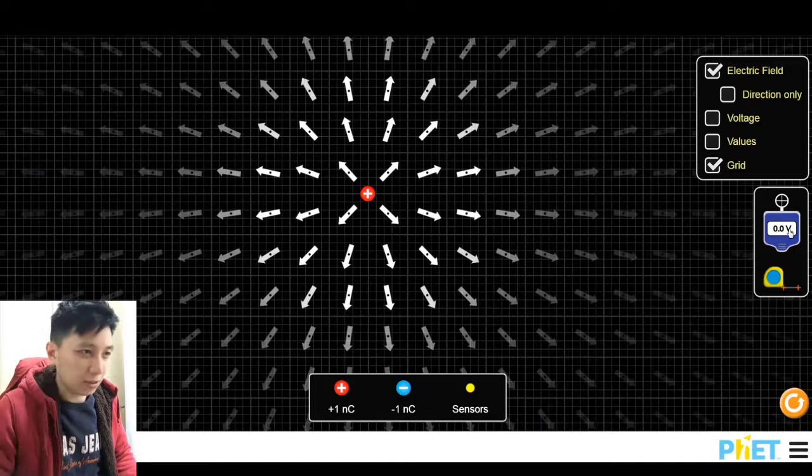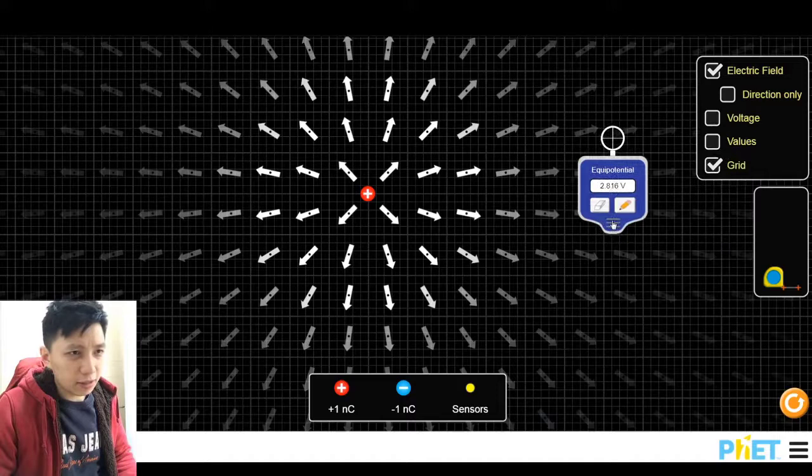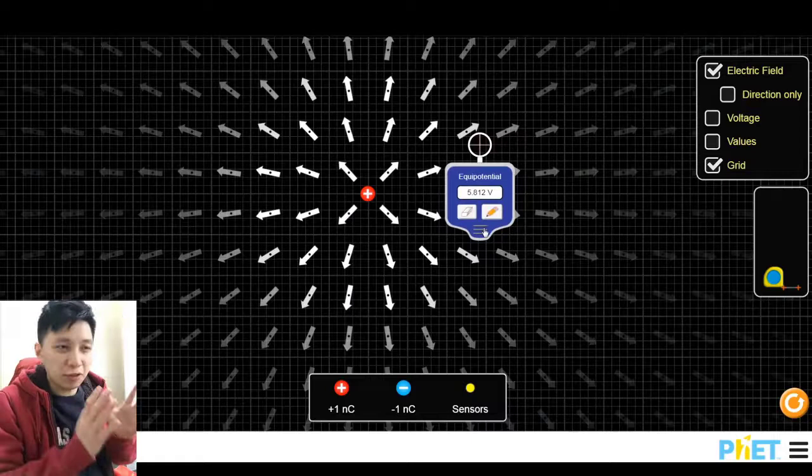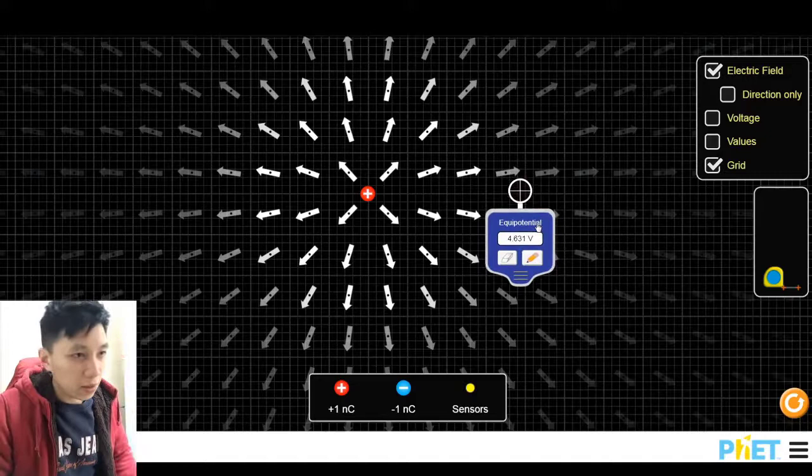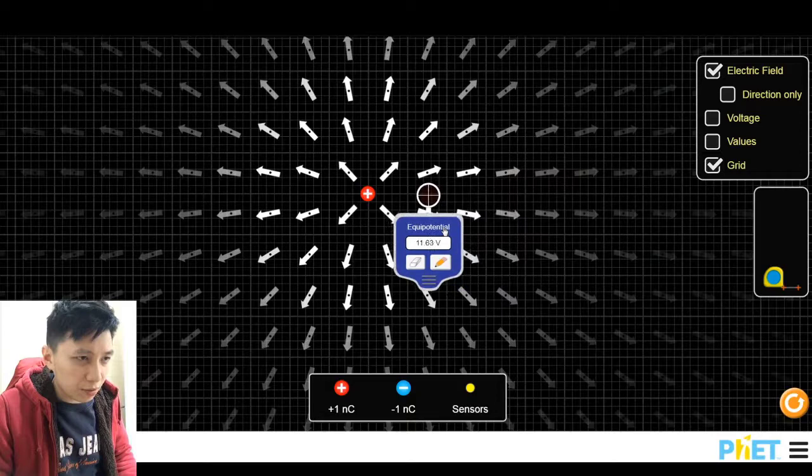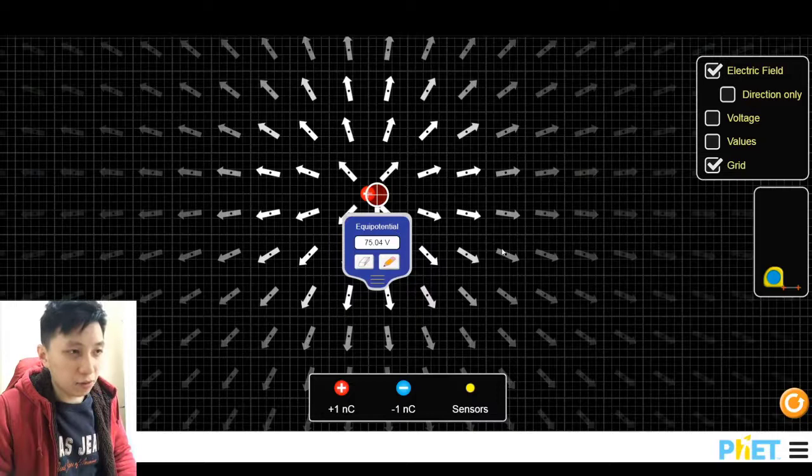What you have to do next is check out this equipotential, it's like a voltmeter. Well not exactly voltmeter, because voltmeter usually measures the potential difference, but this one is literally measuring the potential right there. When you get closer the potential is getting greater and it increases much faster when you get very close, so that again relates to the equation V equals to KQ over L.